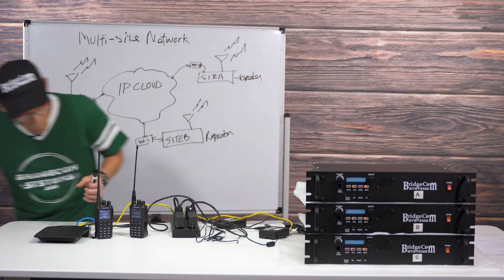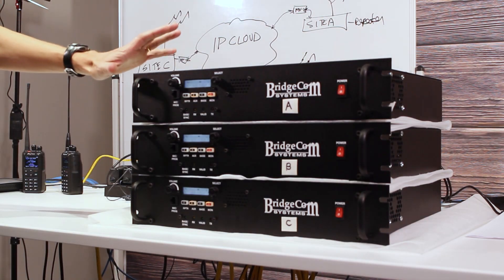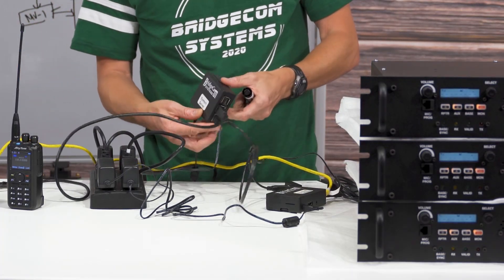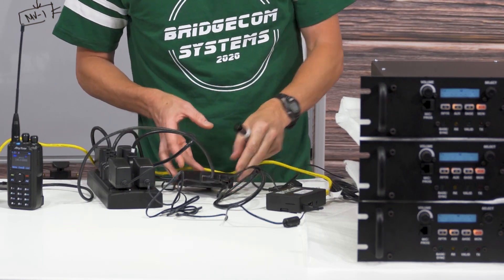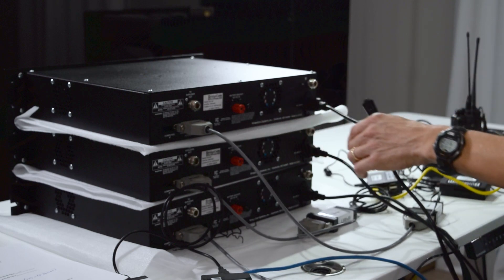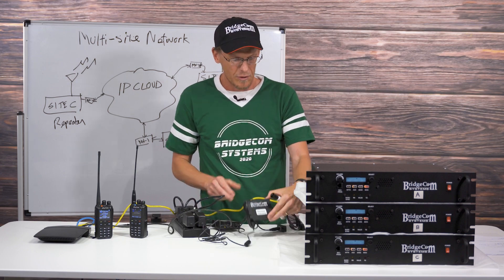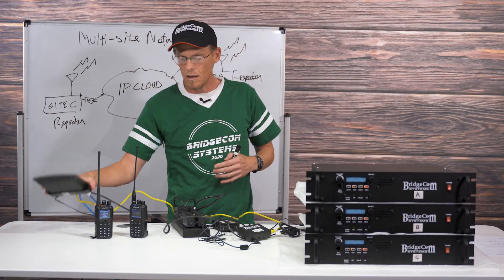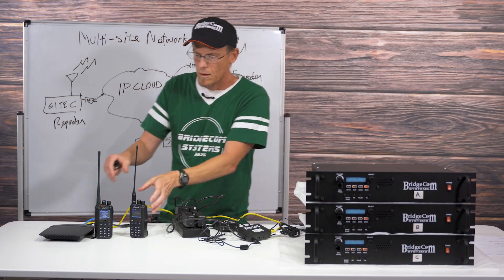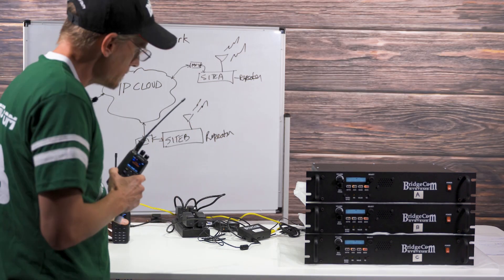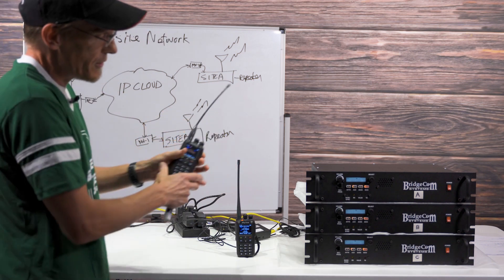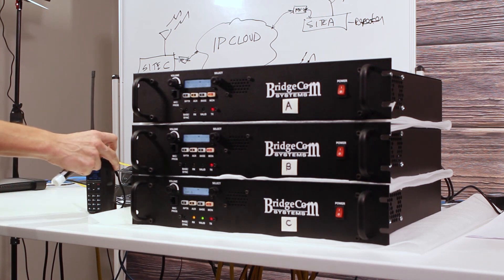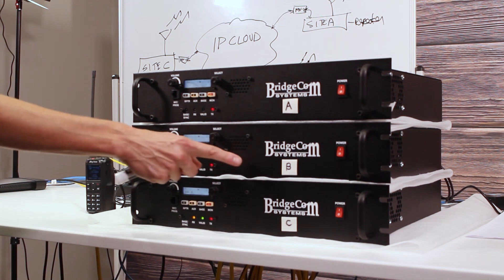Let me go ahead and show you by example the system we've got here. On display is Site A, Site B, and Site C. These are the IP gateways connected to the accessory port of each repeater. One of them functions as the master server, then we have two gateways tied together, effectively simulating the internet. These repeaters are set up on microwatts, so there's no RF being transmitted. I've keyed up repeater Site C and you can see it has raised up Site B and Site A.